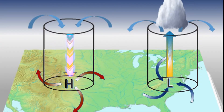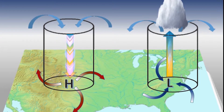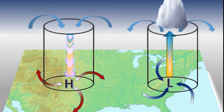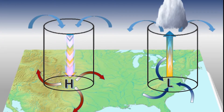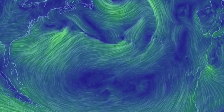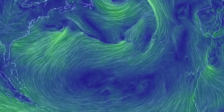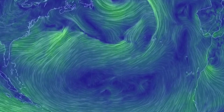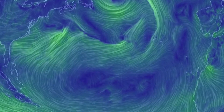Another important aspect of the airflow around high and low pressure centers is the vertical movement of the air, usually at much lower speed than the horizontal wind. At low pressure centers, air rises. At high pressure centers, air sinks towards the surface. At surface highs, also called ridges, wind spirals slightly outward away from the center.